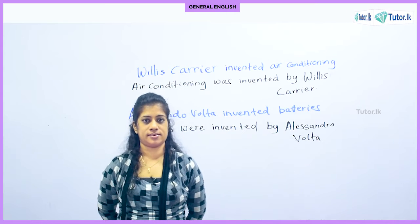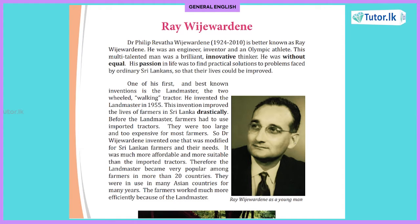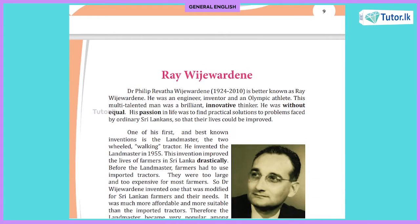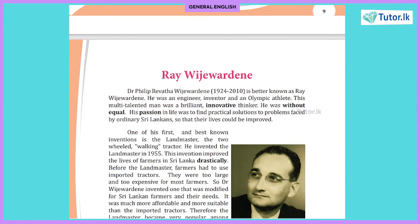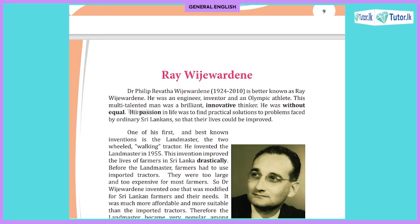Now let us move to reading. Are you ready, children? The reading passage is 'Re Vijaywardhana' on page number 10. Turn to page number 10 and please read with me. Dr. Philip Revata Vijaywardhana, 1924 to 2010, is better known as Re Vijaywardhana - that was his nickname. He was an engineer, an inventor, and an Olympic athlete. My goodness - he was an educated man, an inventor who invented something new, and a sportsman.